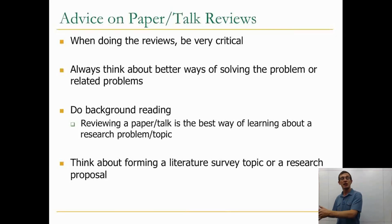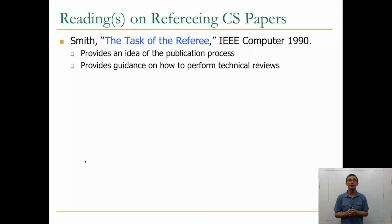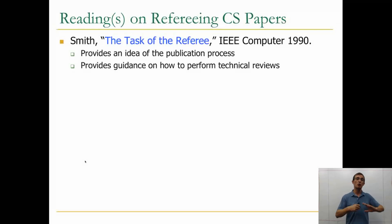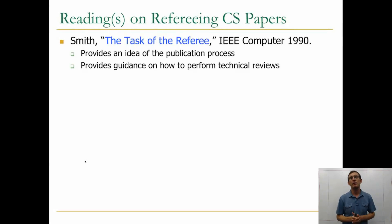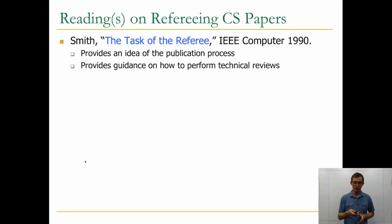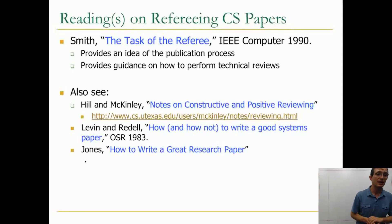One reading I recommend on refereeing computer systems papers is 'The Task of the Referee' written by AJ Smith in IEEE Computer, 1990. It provides an idea of the publication process and what should be done by different parties. Even though it's an old paper, it still reasonably represents how publications are done in computer science and provides guidance on how to perform technical reviews.